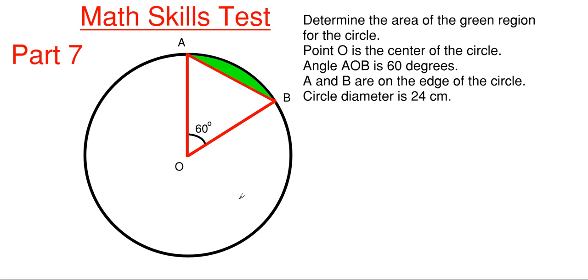In order to find this green region, the area of this green region, we have to do a couple things. We have to find the area of our total circle and we have to find the area of this triangle here and the area of this section or sector of the circle.